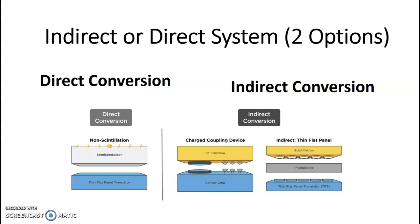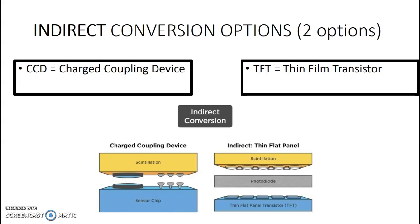I'm going to go through indirect first, because indirect has two different possibilities for materials. It's either using a charged coupled device — the CCD — or the thin film transistor, which is the TFT. So you either have a CCD or a TFT; those are your two options for indirect.